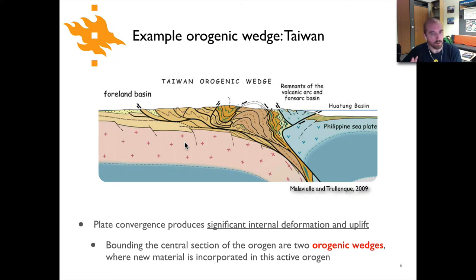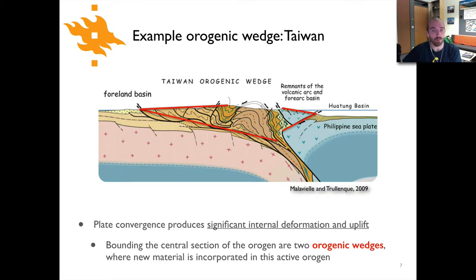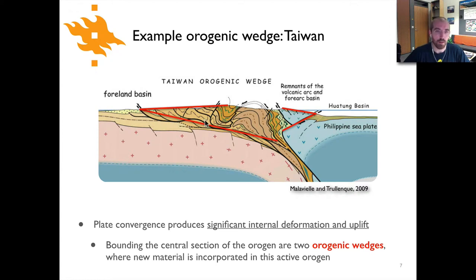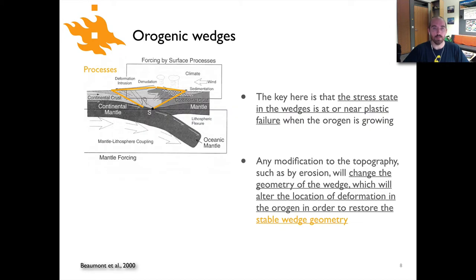Why don't you take a moment, pause the video, and see if you can pick out where you think the orogenic wedges are before we continue. You should have hopefully found something that looks generally like this. Some of these faults are listric and have a more complicated geometry, but you can see clearly something on the Philippine Sea plate side that looks quite like a wedge, and generally something that looks like a wedge on the Eurasian plate side. So we have a nice example of two orogenic wedges back to back.